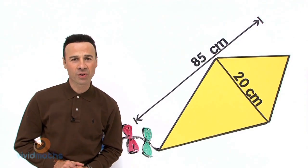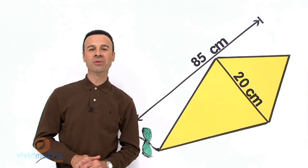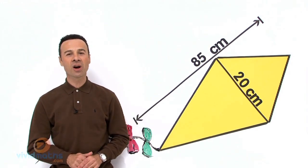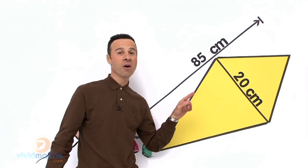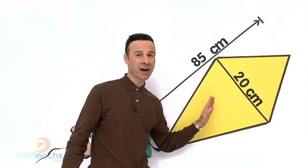To work out the area of the kite, we are going to need the diagonals, which are the dimensions of this particular bright yellow kite right over here.